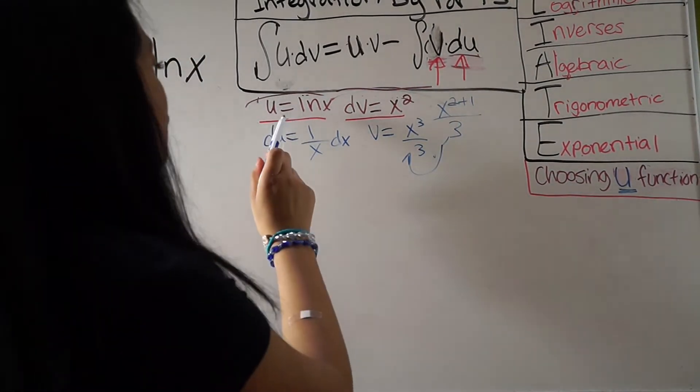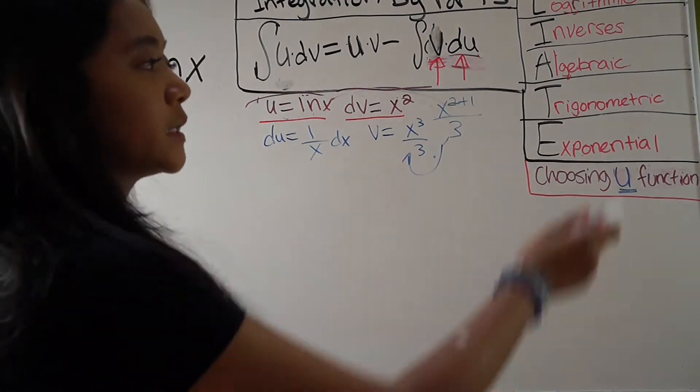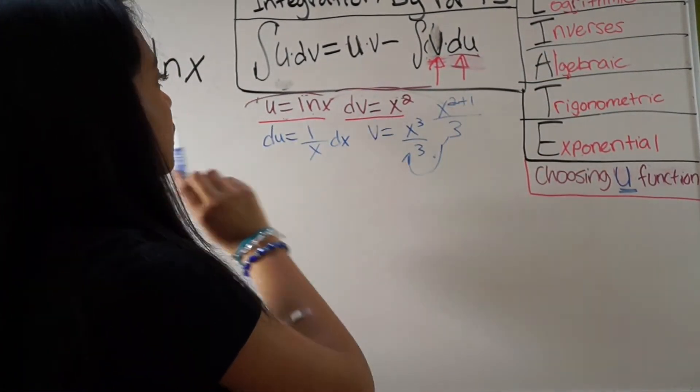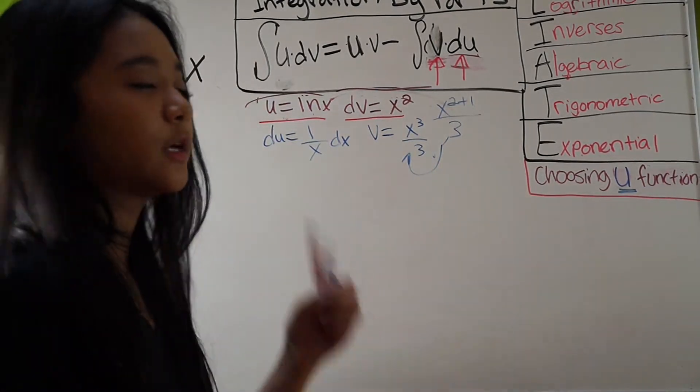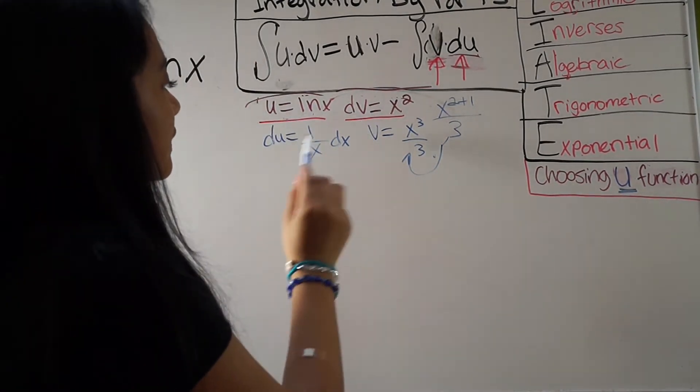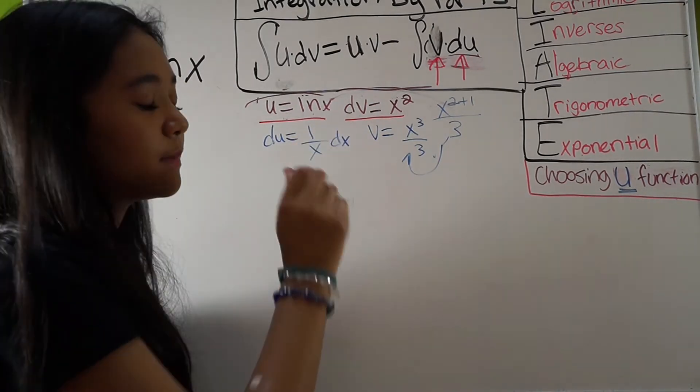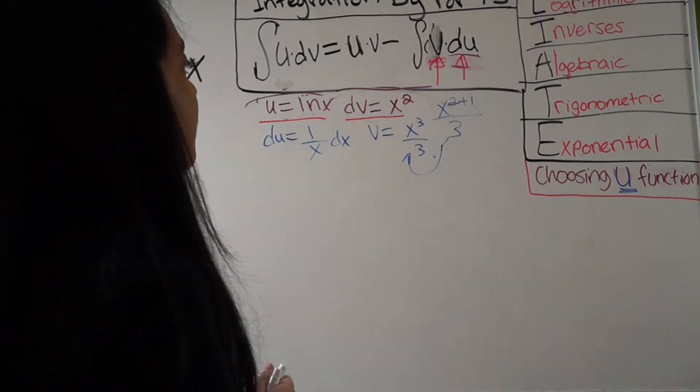So, remember, your U is ln x, why? Because of Liate, to choose U to be your function, and your DV is x squared, over here. That's your last thing. So, if you have your U and your DV, you would derive for your U, and you would integrate for your DV. So, now let's get on with this problem using this formula.